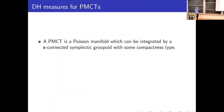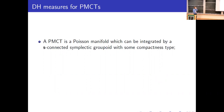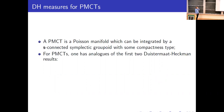Now let's go into PMCTs. A PMCT is a Poisson manifold of compact type. Mimicking classical Lie theory — Lie algebras and Lie groups — you say a Poisson manifold has a certain compactness type if it can be integrated by a source-connected symplectic groupoid with some compactness type. The one we're interested in today is source-proper, meaning the source map is proper.